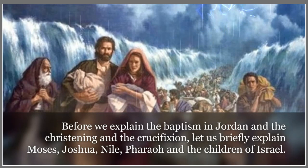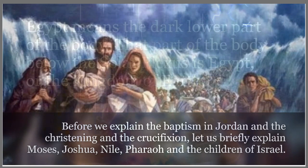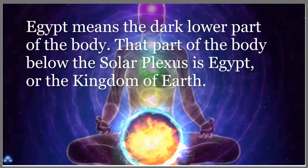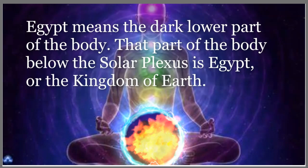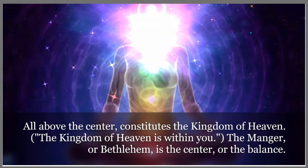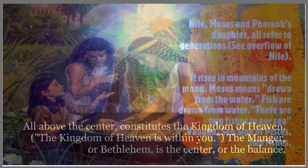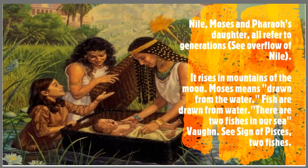Before I explain the baptism in the Jordan and the christening in the crucifixion, let us briefly explain Moses, Joshua, the Nile, Pharaoh, as well as the children of Israel. Egypt means the dark lower part of the body. That part of the body below the solar plexus is Egypt, or the kingdom of earth. All above the center constitutes the kingdom of heaven. "The kingdom of heaven is within you." The manger, or Bethlehem, is the center, or the balance. The Nile, Moses, and Pharaoh's daughter all refer to generations.